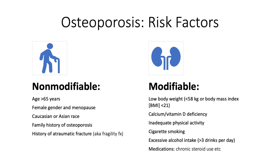There are modifiable and non-modifiable risk factors. What we cannot modify includes our age, gender, menopausal state, race, family history — you can't pick your parents — and a history of a fragility fracture.